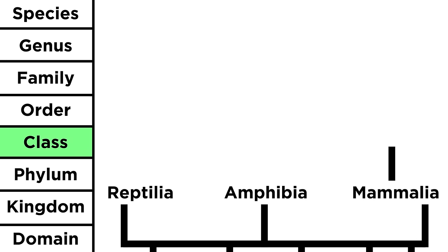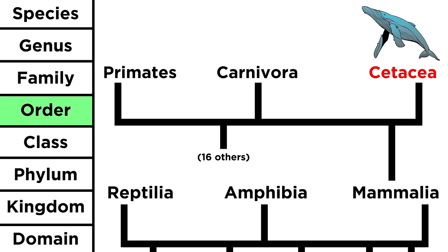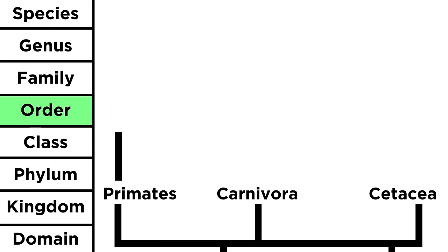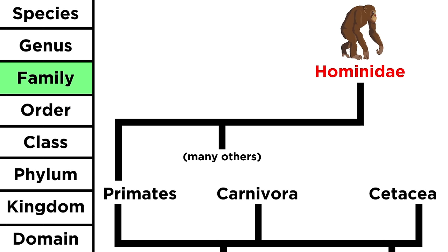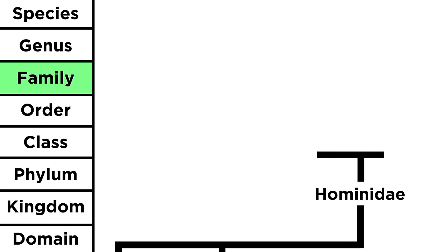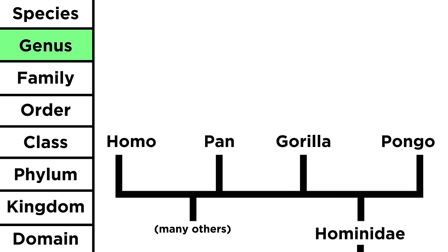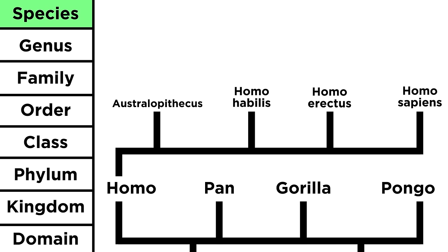Humans belong to mammalia, and within this class there are a number of orders. The order cetacea contains all the whales and dolphins; carnivora contains things like bears and weasels; then there are the primates — that's got everything from orangutans to lemurs, and humans are in there too. Within the order of primates, there are several families. The family hominidae contains all the great apes, so that's us again. Within hominidae, every organism belongs to a particular genus, and that's where we diverge from the apes. Our genus is called Homo, which means man in Latin. Within a genus there are several species, and all the species within the genus Homo are now extinct, except for Homo sapiens, and that's us.